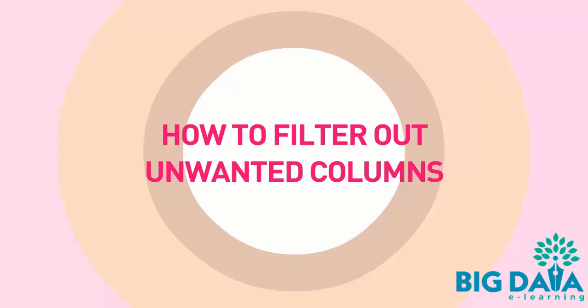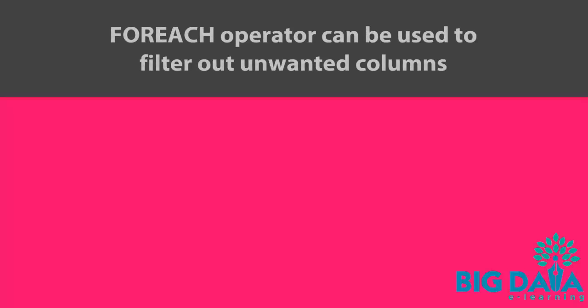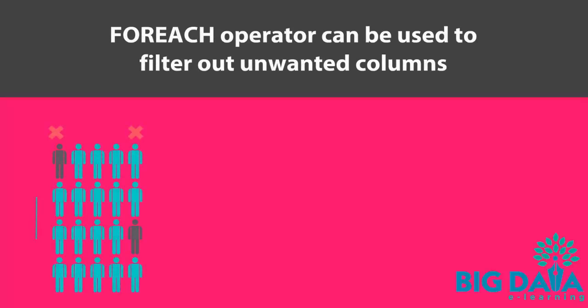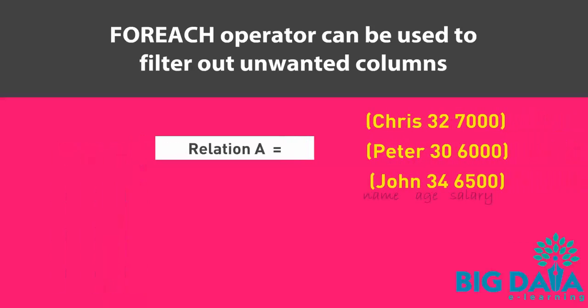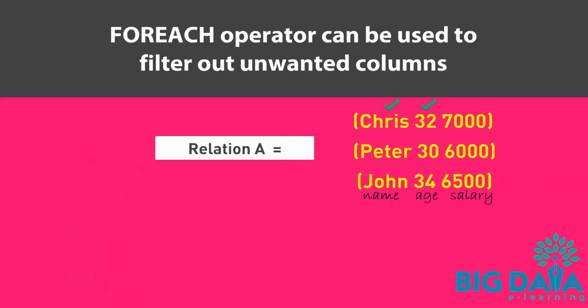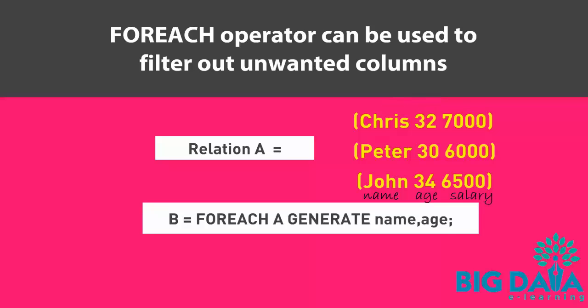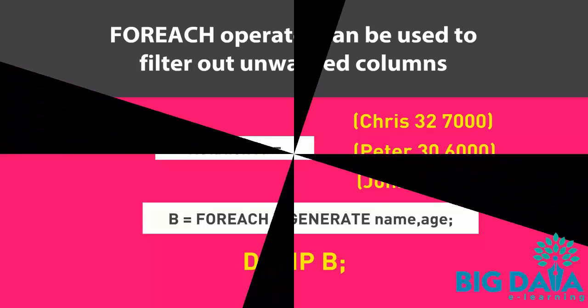How to filter out unwanted columns. The ForEach operator can be used to filter out or remove unwanted columns. In other words, it can be used to select the columns that are needed. Suppose in our relation A, we need to include only the name and the age columns. Then we can use the ForEach operator as specified in the below example. To verify if alias B contains only the name and the age columns, we can apply the dump operator on alias B.